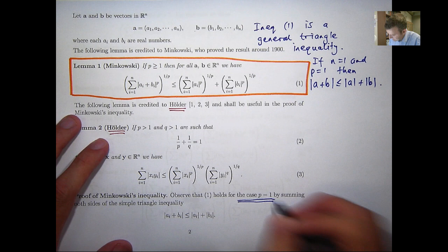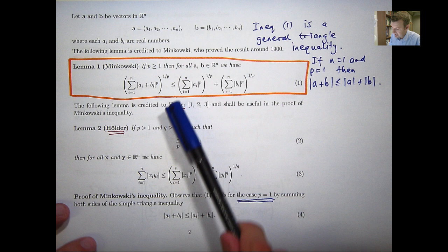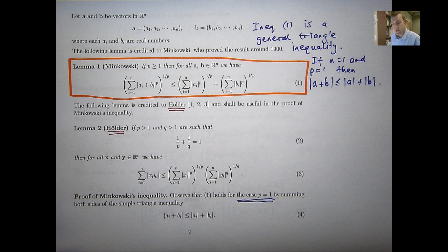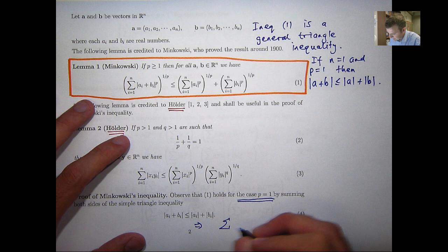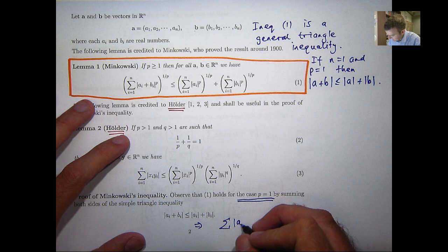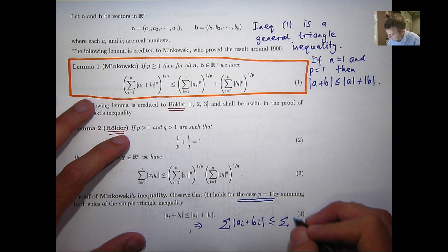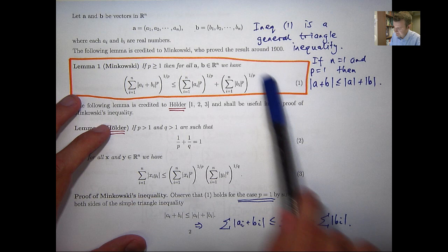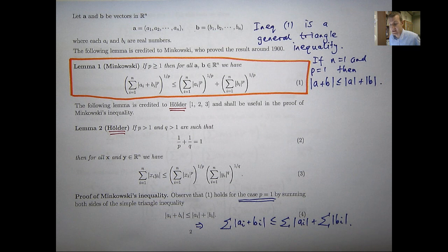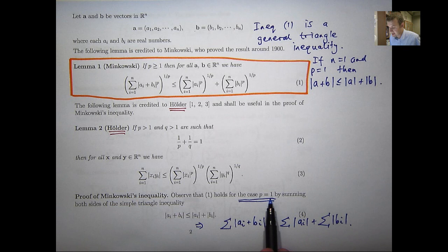The case P equals 1. Well, for the case P equals 1 up here, these powers sort of disappear. And what you do is you start with this basic triangle inequality and then you sum both sides. So if I was to sum both sides, summing from i equals 1 to i equals n, then you can keep the inequality and distribute the summation. And in fact, this is Minkowski's inequality for the case when P equals 1. So that was very easy. Now the more challenging part of the proof is the case when P is strictly greater than 1, and for that we're going to apply Holder's inequality.